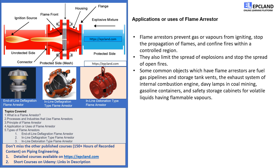Let's talk about various applications of flame arresters. Flame arresters are widely used in various industries and applications to ensure safety and prevent hazards. One of the common objects that use flame arresters is fuel gas pipelines and storage tank vents. These pipelines and vents contain flammable vapors which can ignite and cause significant damage. Flame arresters prevent the ignition of these vapors and prevent any accidents from occurring. The exhaust system of internal combustion engines also uses flame arresters, as these engines produce flammable vapors that can ignite and cause an explosion if they come in contact with a spark or flame.